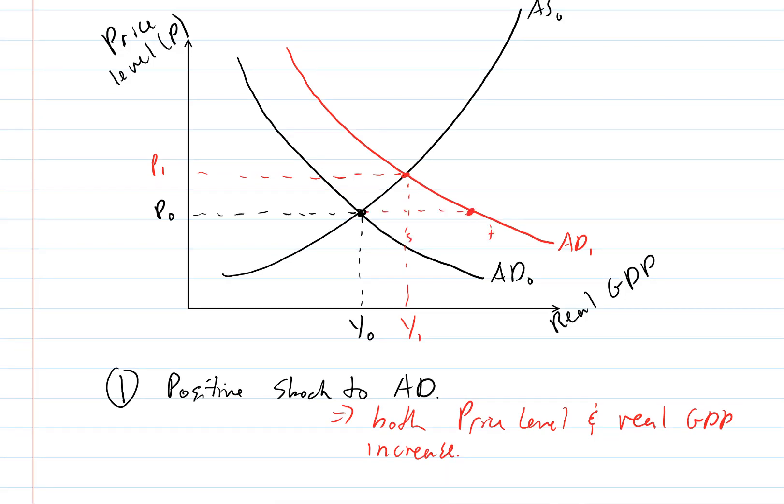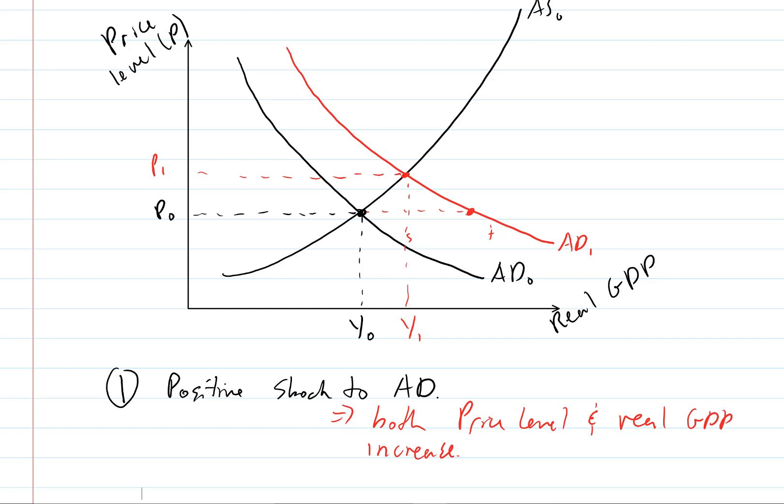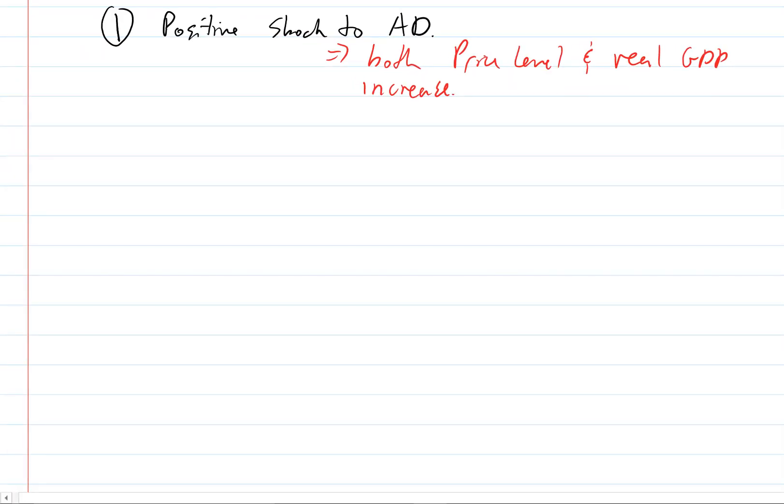Now let's analyze the second scenario where there's a negative shock to aggregate demand. So let's just scroll down. We'll need to redraw our axes here. So again, we have price level on this axis. We have real GDP on the x-axis.